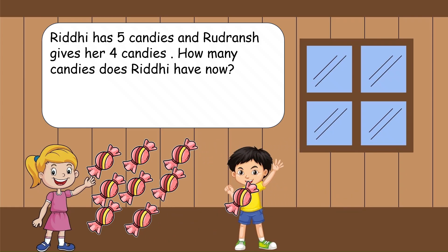Look, Rudhrans ne Riddhi ko candies dene ke baad, Riddhi ke paas bahut saare candies ho gaye hain, na? Pahle se bhi jyada ho gaye hain. So, more means — you know it very well — addition. More means addition.